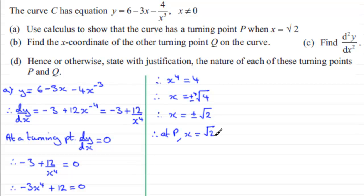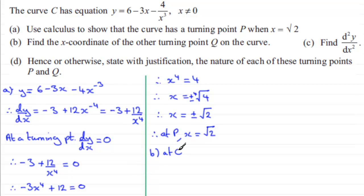We had to show the curve has a turning point at P where x equals root 2, so at P, x equals positive root 2. For part B, which asks for the x-coordinate of the other turning point Q, the other solution gives us that at Q, x must equal minus root 2.